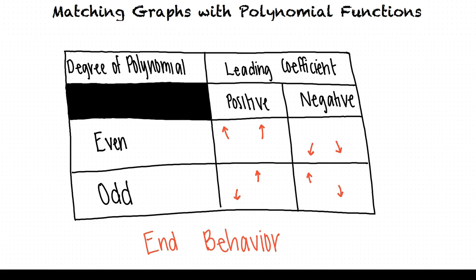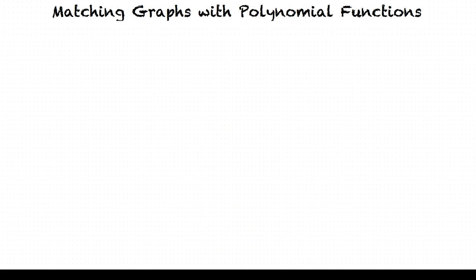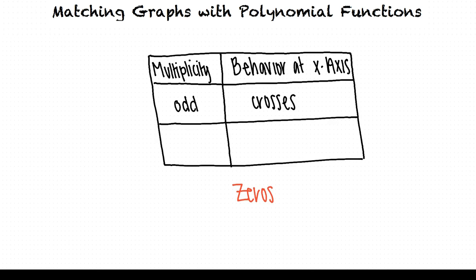These characteristics — the degree of the polynomial and the sign of the leading coefficient — tell us the general shape of the curve, but different things could be happening in between the ends. Another important feature to take into account is the graph's behavior near the zeros. If a zero has odd multiplicity, the graph crosses the x-axis at that zero. If a zero has even multiplicity, the graph touches the x-axis at that zero.